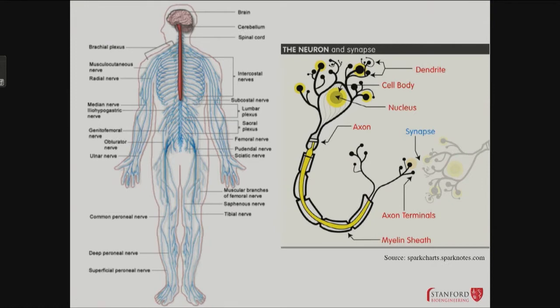The peripheral nervous system is everything that's not the central nervous system. Central nervous system is the brain and spinal cord. Everything downstream of the spinal cord—nerves going out to muscles and coming in from the skin—are the peripheral nervous system.